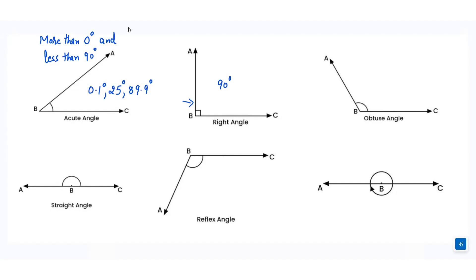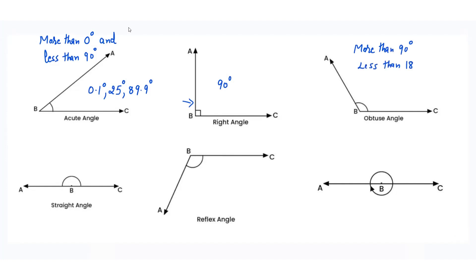The third type of angle is obtuse angle. The angle which is more than 90 degrees and less than 180 degrees is called an obtuse angle.